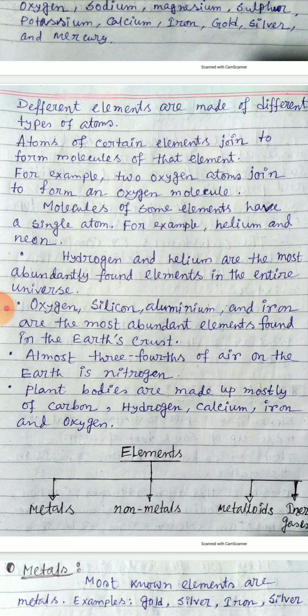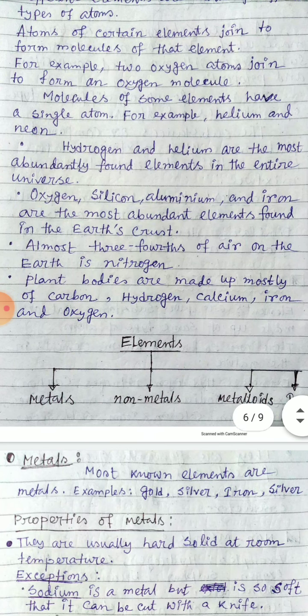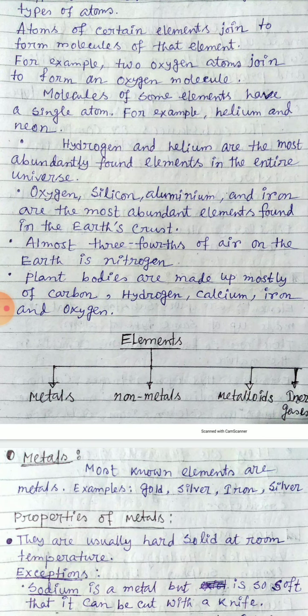Hydrogen and helium are the most abundant elements found in the entire universe. Oxygen, silicon, aluminum, and iron are the most abundant elements found in the Earth's crust.